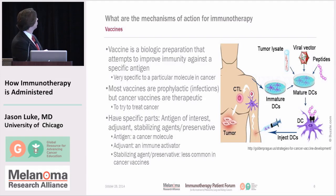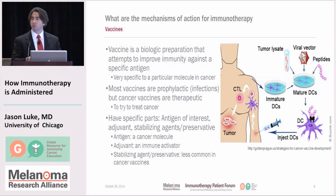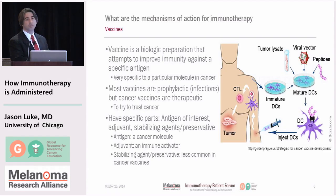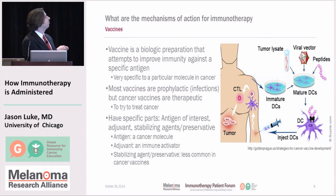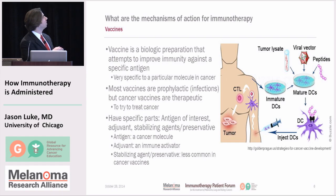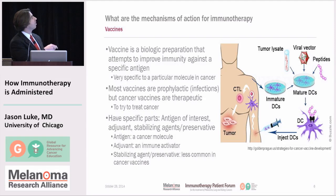Vaccines have specific parts: the antigen that we're trying to get the immune system to look at; an adjuvant, which is part of the preparation that tries to stimulate the immune system to notice it; and often a stabilizing agent that allows it to have a longer shelf life. In practice, you give these antigens — which can be part of the tumor, part of a virus, or part of a peptide — and the dendritic cells find them, go to the lymph nodes, and tell the T cells, who go after the tumor. One approach takes dendritic cells out of the patient, exposes them in the lab, and puts them back — used in prostate cancer with a drug called Sipuleucel-T.